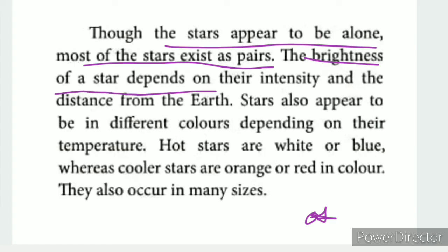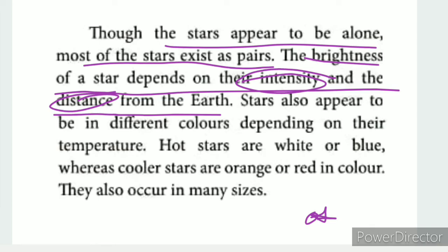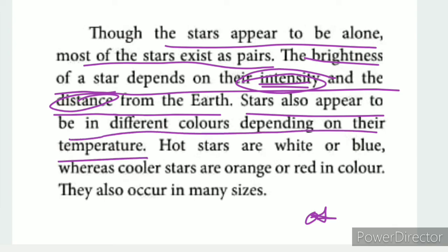The brightness of a star depends on its intensity and its distance from the Earth. Stars appear in different colors depending on their temperature. Hotter stars are white or blue in color, while cooler stars are orange or red.